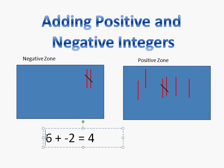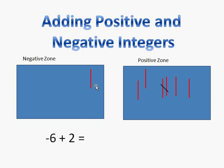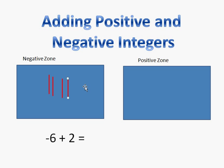Let's try another one — negative six plus a positive two, and let's see what happens. So I need negative six: one, two, three, four, five, and six. Since it's negative six, I have to put my six in the negative zone. Then I have positive two, so I add one and two in the positive zone.